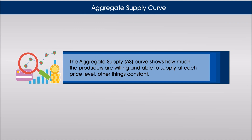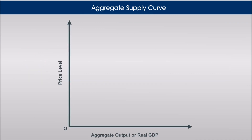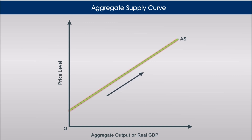The aggregate supply curve shows how much producers are willing and able to supply at each price level, other things constant. The upward sloping aggregate supply curve shows a positive relationship between the price level and the quantity of real GDP supplied, other things constant.